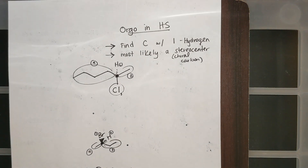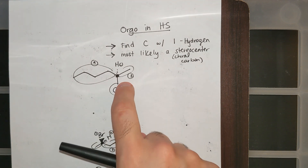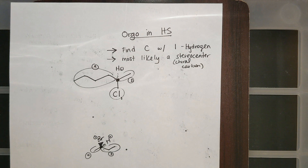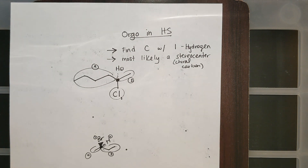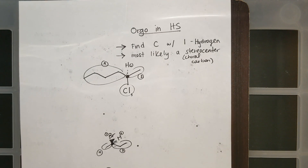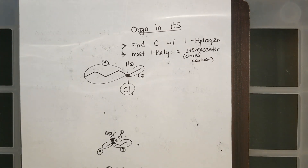Make sure you get the idea of how to identify stereocenters — it's very important. We will do more practice and have notes on identifying chiral carbons, and then eventually we'll use the word enantiomer again. After this, we'll be doing some notes together in class, so make sure you get this idea and ask any questions or concerns you have.